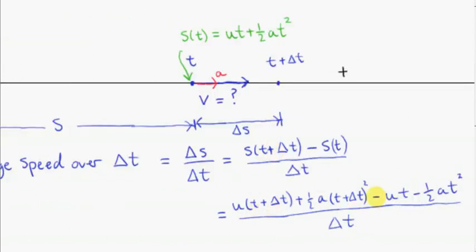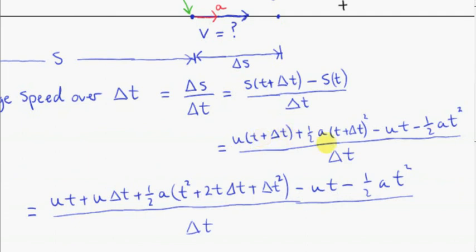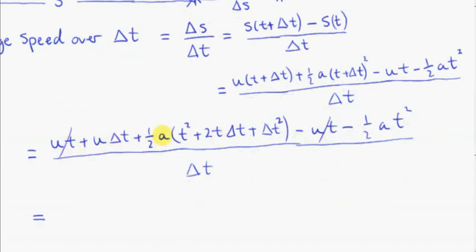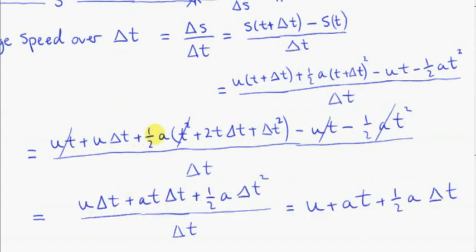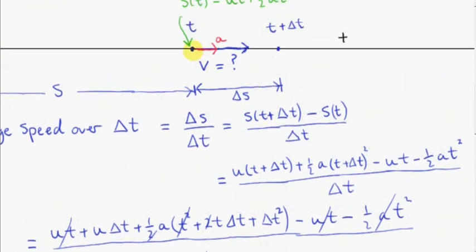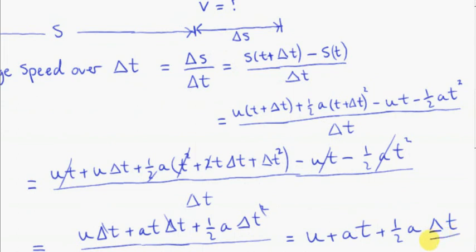To get delta s, we find the distance at time t plus delta t minus the distance at time t, all divided by delta t. We plug in and subtract s of t, which is ut plus a half at squared. Multiplying out and squaring t plus delta t gives t squared plus 2t delta t plus delta t squared. The ut terms cancel, and the half at squared terms cancel, leaving us with u plus at plus a half a delta t as the average speed over delta t.